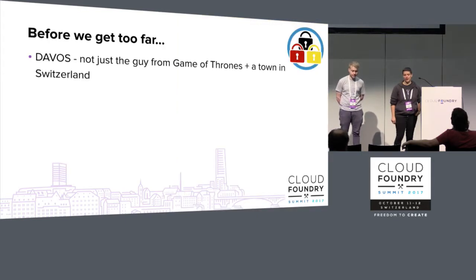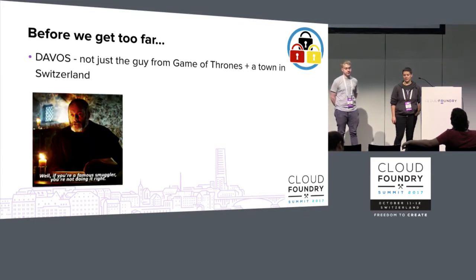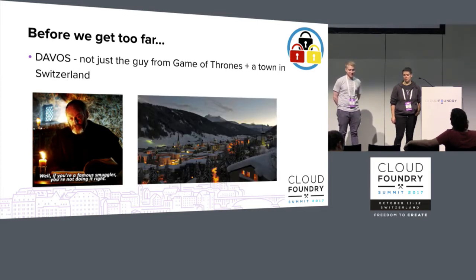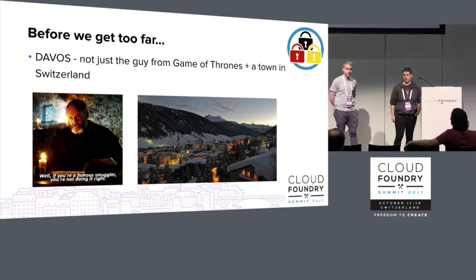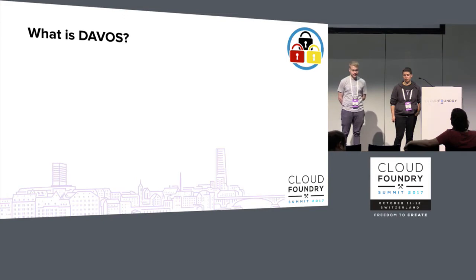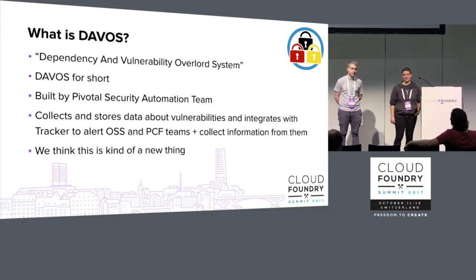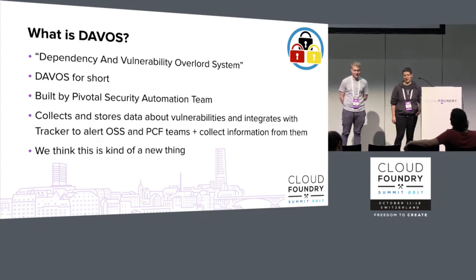Just before we get too far, this thing called Davos that we're talking about today — it's not just the guy from Game of Thrones and it's not just a town in Switzerland. It's a vulnerability management tool that we've been building internally that we want to start sharing with the foundation. It's also known as the Dependency and Vulnerability Overlord System — Davos for short.